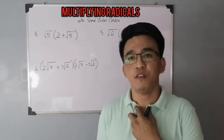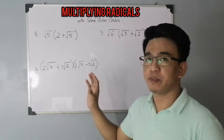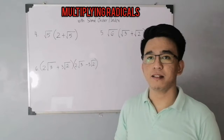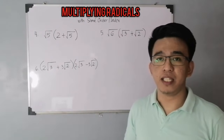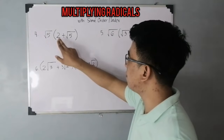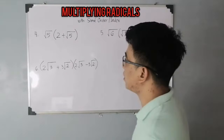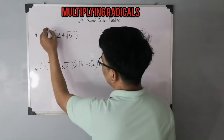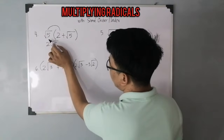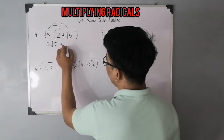Let's move on with items 4, 5, and 6, which involve monomial and binomial expressions. In multiplying these kinds of radical expressions, we will use the distributive property or FOIL method. In item number 4, we have the square root of 5 times the quantity 2 plus square root of 5. Using the distributive property, multiply the square root of 5 by 2 to get 2 square root of 5, and then multiply square root of 5 by square root of 5 to get the square root of 25.